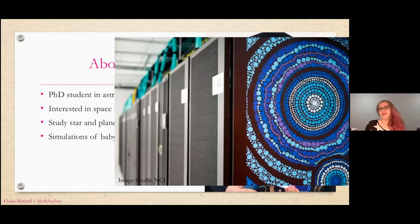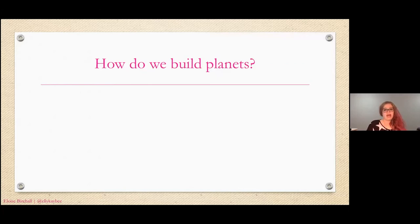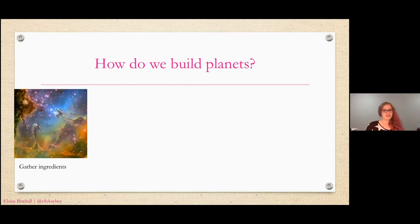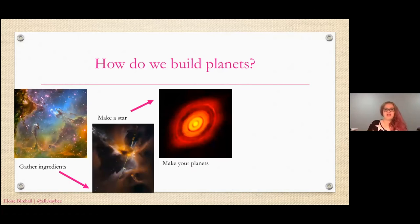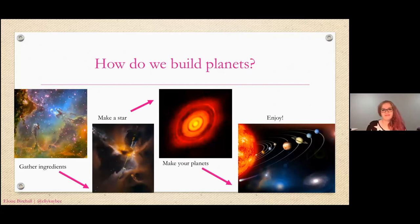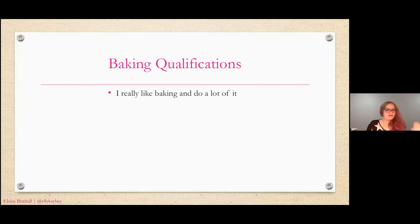If we're trying to make a star and a planet in real life, how would we go about that? The first step is to get all your ingredients together — it's kind of like making a cake. Then you make a star, then you make planets, and then at the end you get to enjoy your solar system. This talk is going to have a few baking analogies in it.